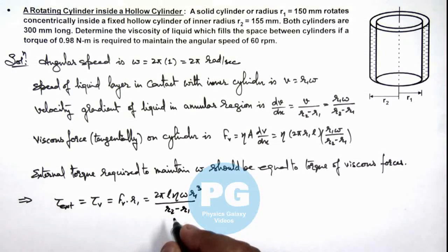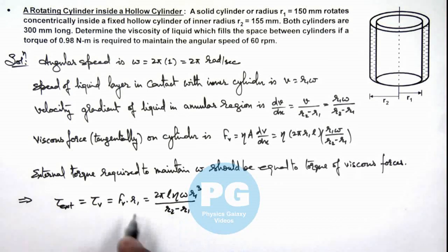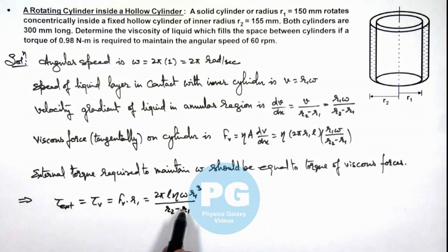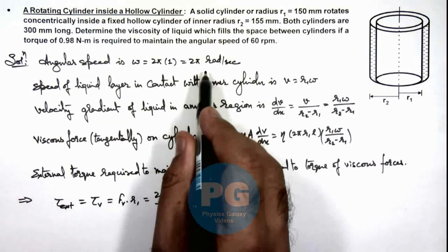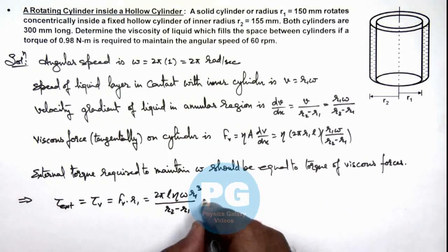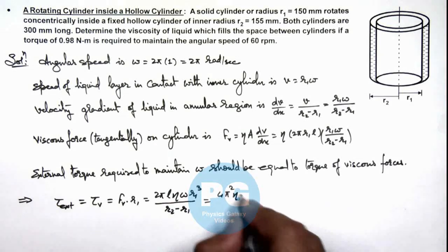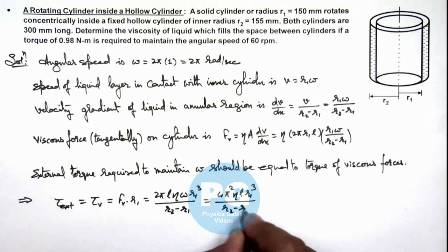So this is the force of viscosity, and this multiplied by r1 gives us the viscous torque. In this situation we can substitute the value of omega which is 2π radian per second. So this will further give us 4π² η L r1 cube divided by r2 minus r1.